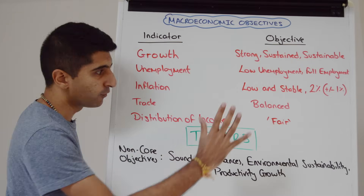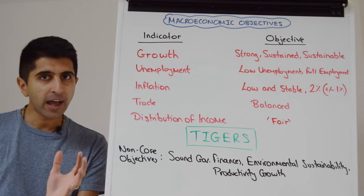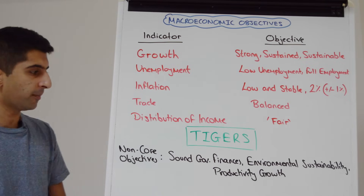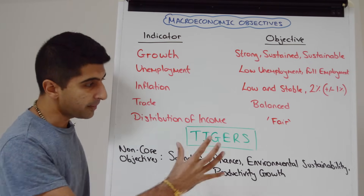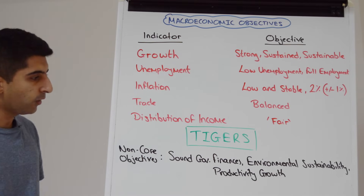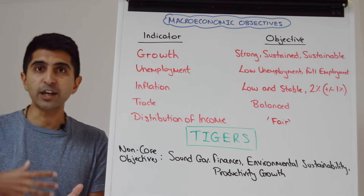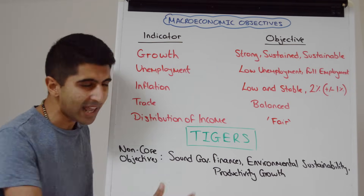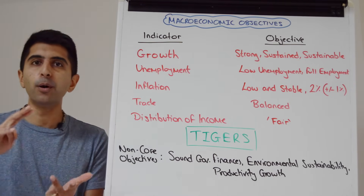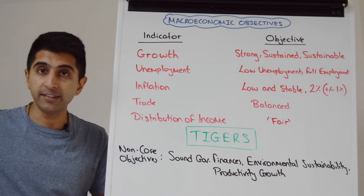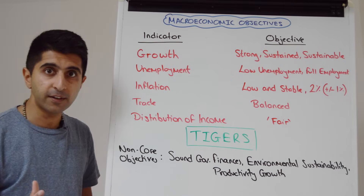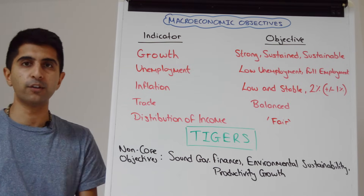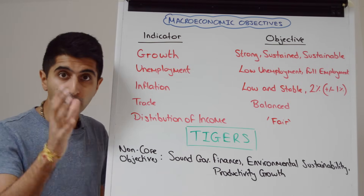As well as these core objectives, economies around the world will also have other very important macro objectives — we can call them non-core macro objectives. The UK economy is very much focused on these, as are many other countries. These include sound government finances, making sure the economy can pay its way in the future; environmental sustainability; and productivity growth — labor productivity growth, which is output per worker per hour — making sure that productivity is rising over time. These are also very important objectives, but maybe not in the core category that all economies would focus on at all times.